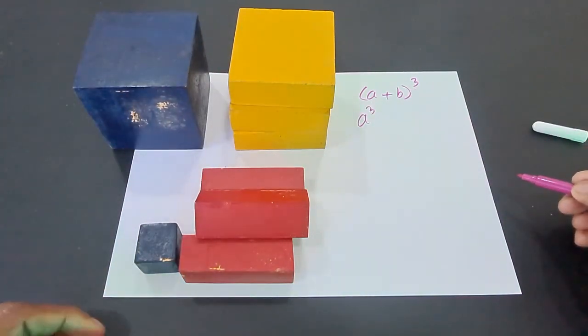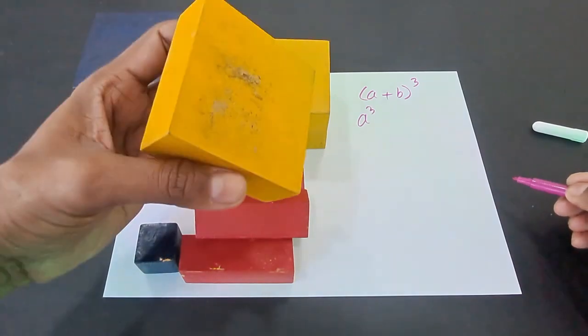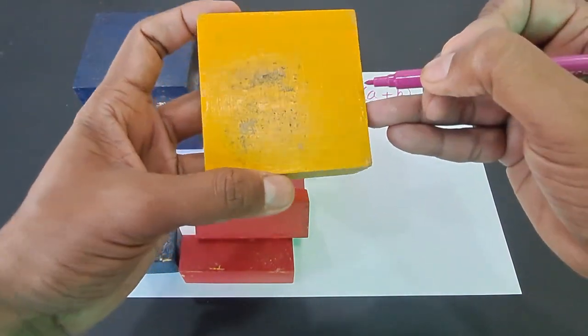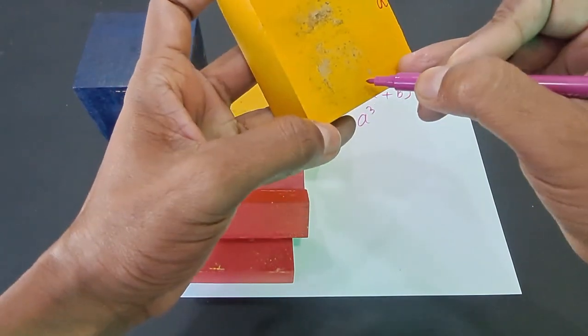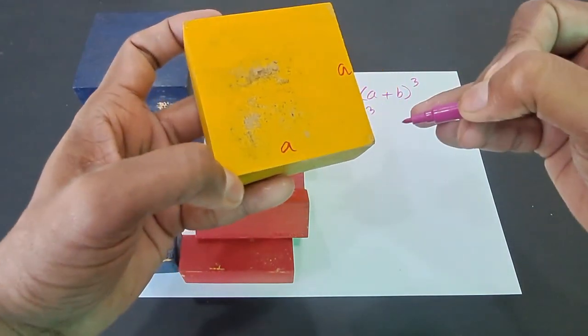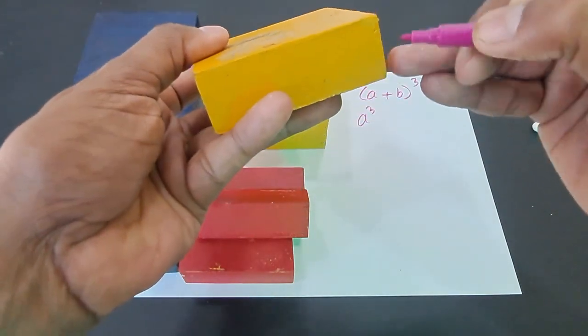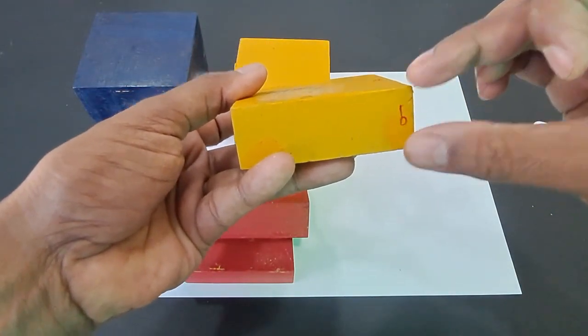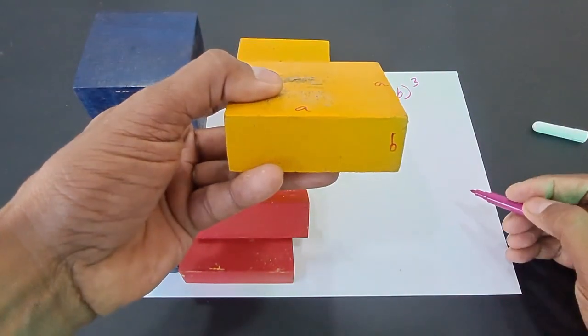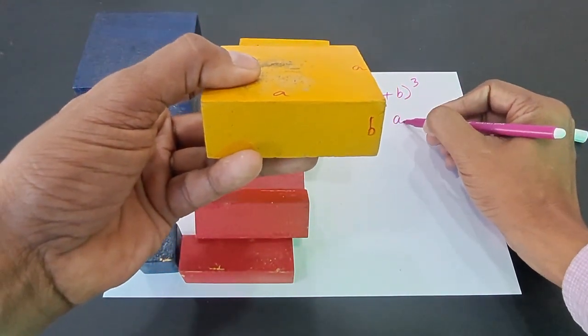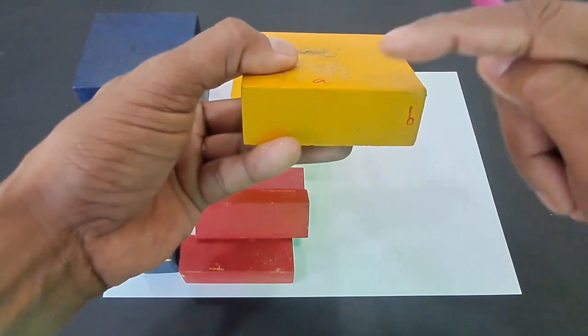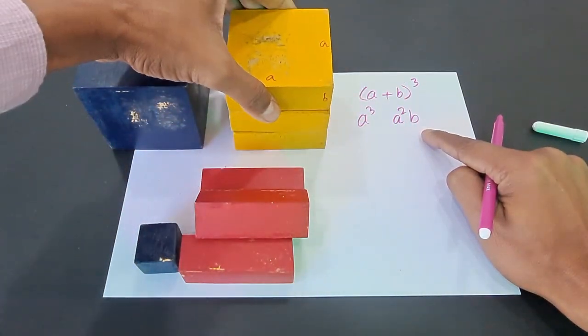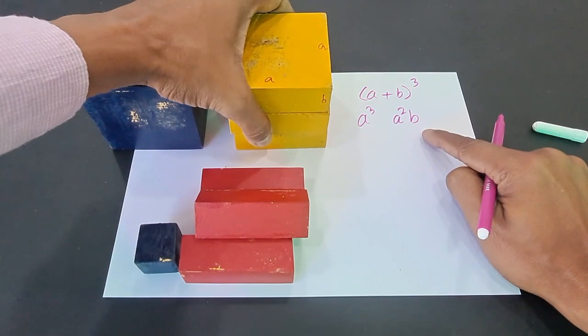Now let's take this particular solid. You have the dimensions as a here, a here; the length and breadth are both a, the height is b, because b is the smaller length. Therefore the volume of this cuboid is a²b, because a times a times b is a²b. How many such cuboids do we have? We have three such cuboids, so three cuboids, the combined volume is 3a²b.